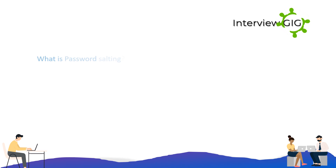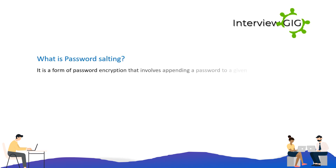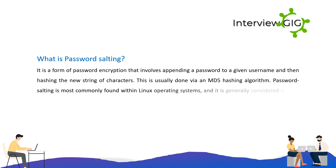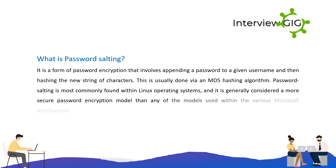What is password salting? It is a form of password encryption that involves appending a password to a given username and then hashing the new string of characters. This is usually done via an MD5 hashing algorithm. Password salting is most commonly found within Linux operating systems, and it is generally considered a more secure password encryption model than any of the models used within the various Microsoft distributions.